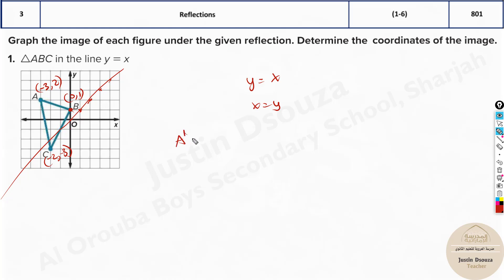So a prime the reflected point or a dash will be swap them. 2, comma minus 3. That's it. For reflecting along x equals y you just swap these up. 2, minus 3. And what is b prime? It will be 1, 0 and c prime will be minus 3, minus 2.